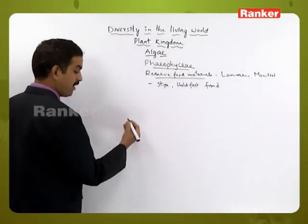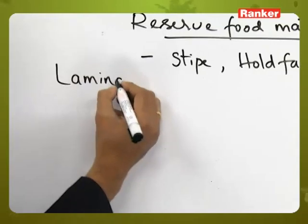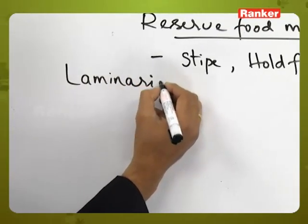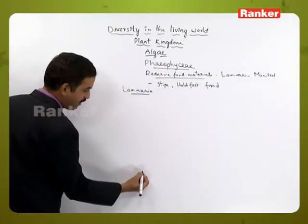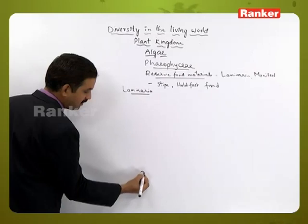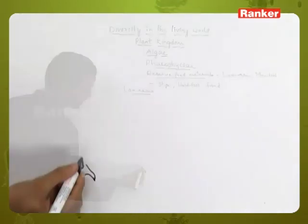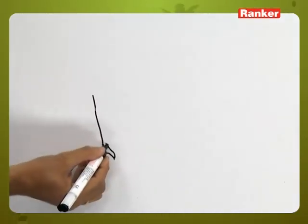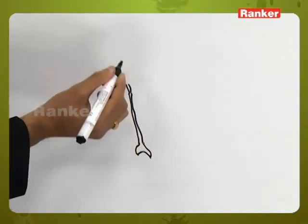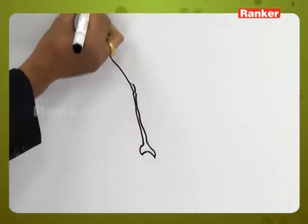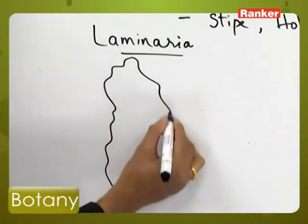In Laminaria, we can see at the basal part an attachment organ called the holdfast. Above that, a thin structure called the stipe is present, and above the stipe the frond-like organization is present.